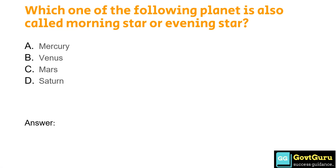Which one of the following planets is also called the morning star or evening star? Option A: Mercury, Option B: Venus, Option C: Mars, Option D: Saturn. The correct answer is Option B, Venus.